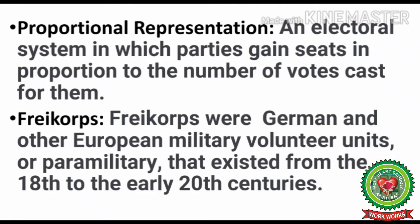The next word is proportional representation — an electoral system in which parties gain seats in proportion to the number of votes cast for them. The population of any place is the determining factor of the seats won by different political parties. In Germany, the Reichstag, and in India for the election of the Lok Sabha and Rajya Sabha, the system of proportional representation has been chosen. States with more population receive more representation in the legislature.